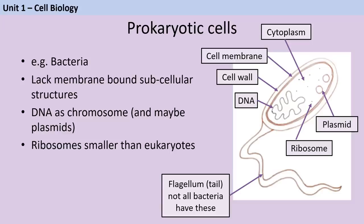In addition to lacking a nucleus, bacteria lack any membrane-bound subcellular structures, like mitochondria or chloroplasts. A mitochondrion is about the same size as a bacterium, so there just isn't room inside the prokaryotic cell for one. The ribosomes of prokaryotic cells are smaller than those in eukaryotic cells. Also, the cell walls of bacteria are not made of cellulose. Some bacteria may have a flagellum, which acts like a tail and allows the bacteria to move around more easily.